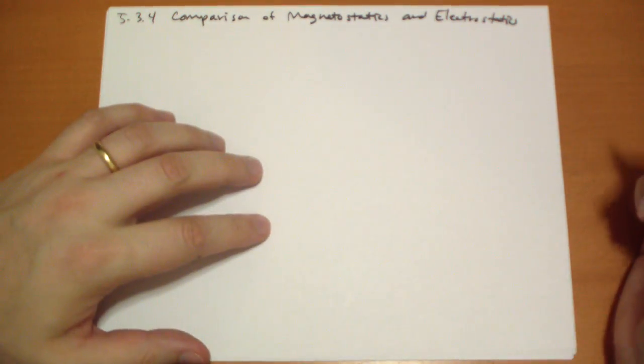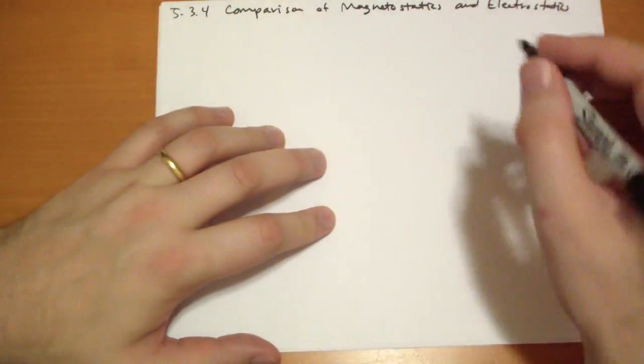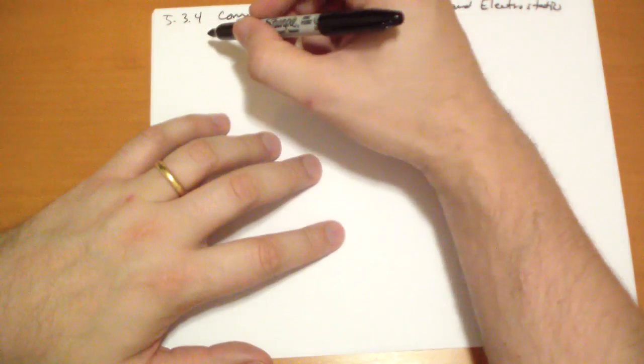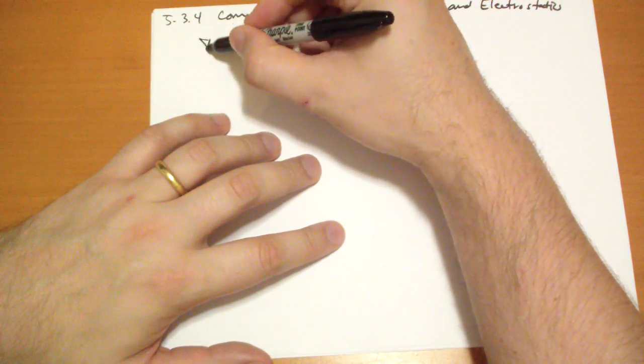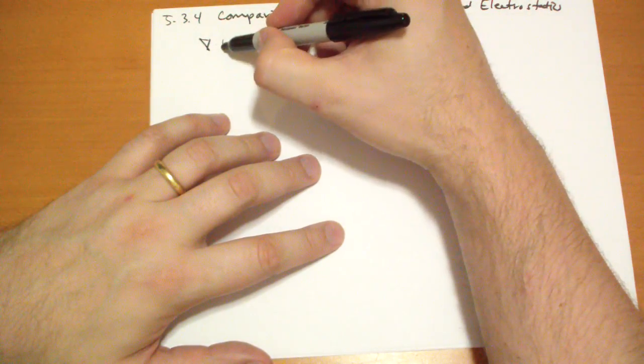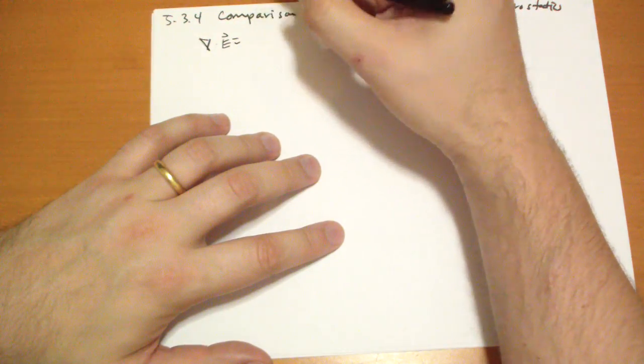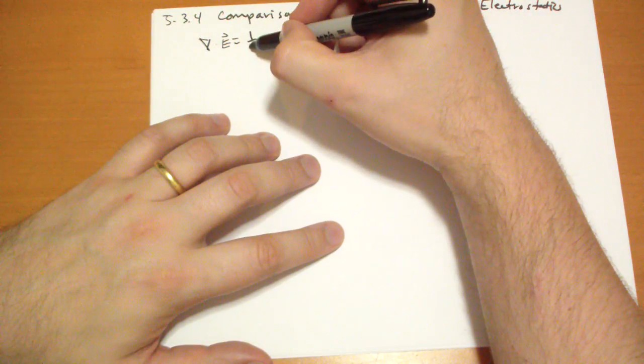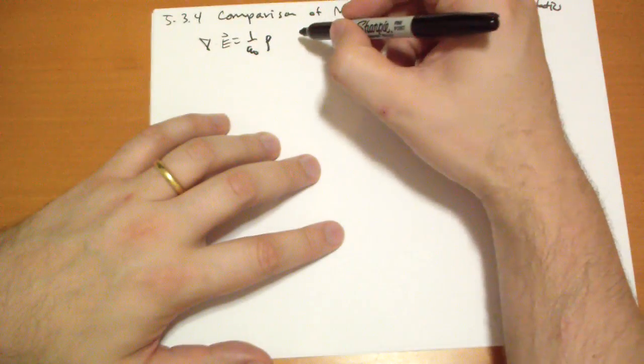So, Maxwell's equations. This is the first time you're going to see them. And this is not the complete Maxwell's equations. This is Maxwell's equations for electrostatics and magnetostatics. So we have the divergence of the electric field is 1 over epsilon naught rho. Okay, that's Gauss's law.